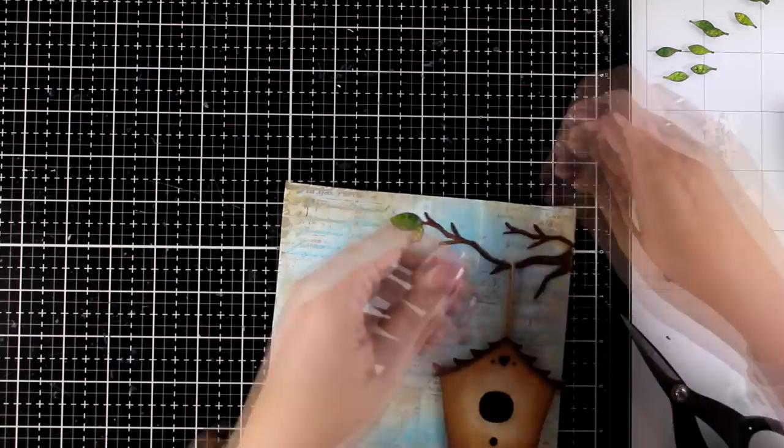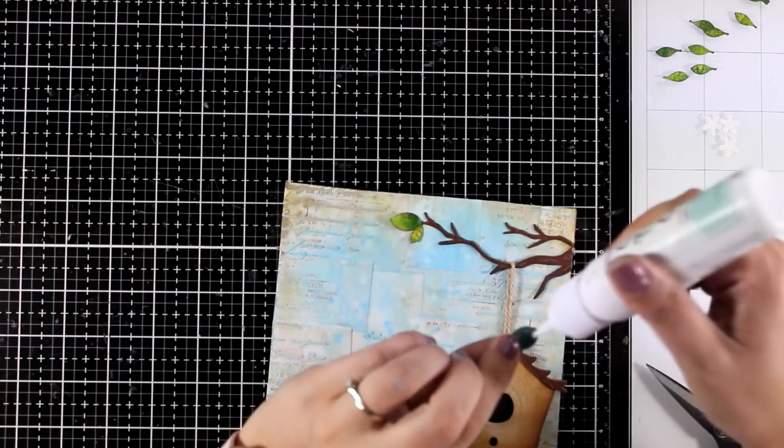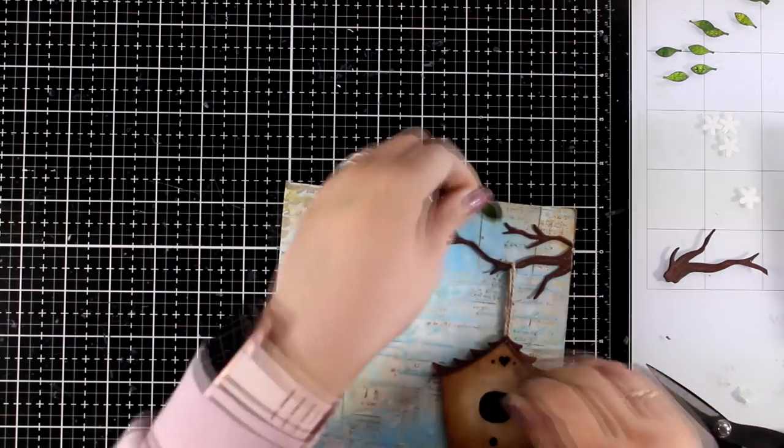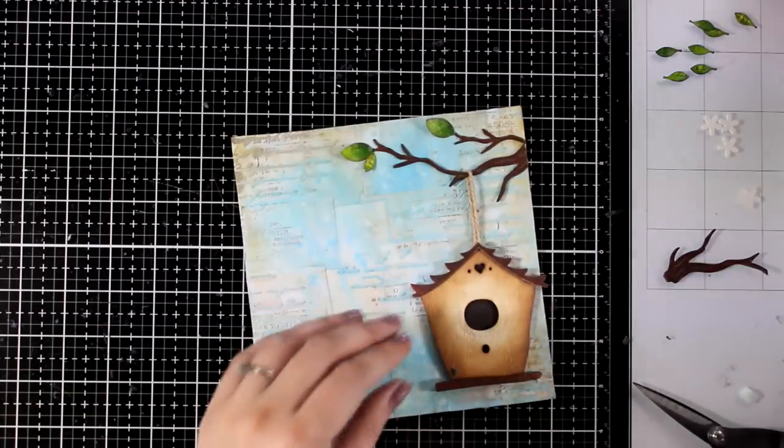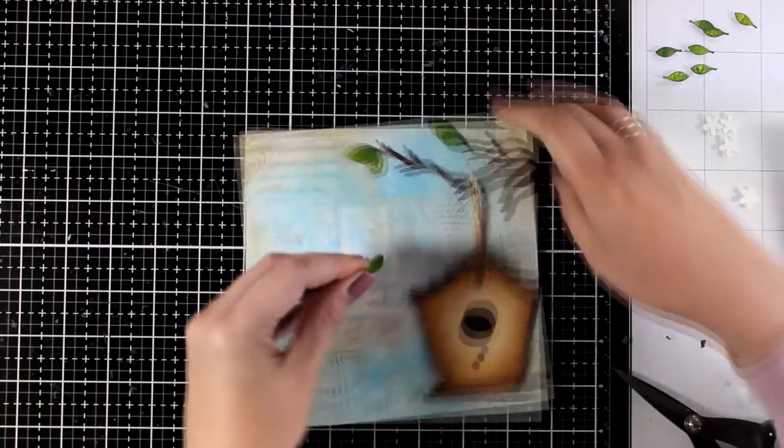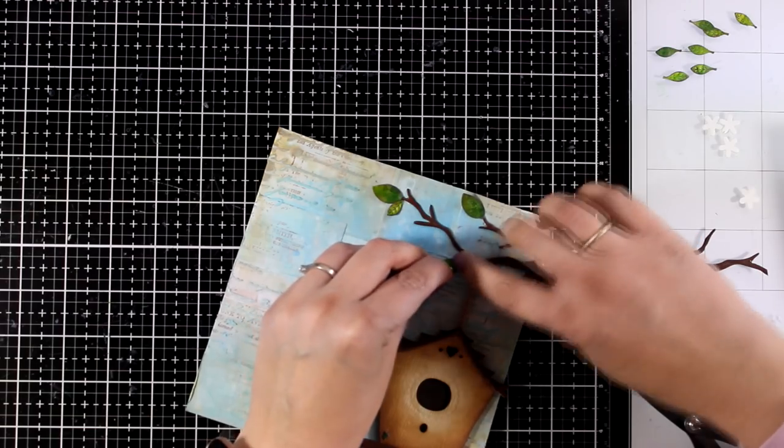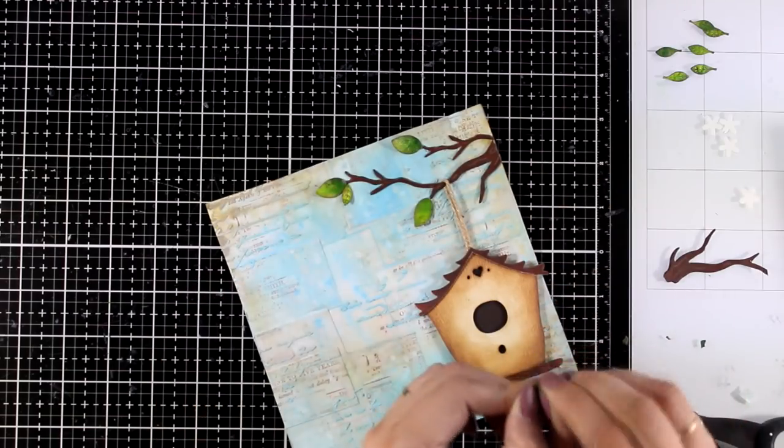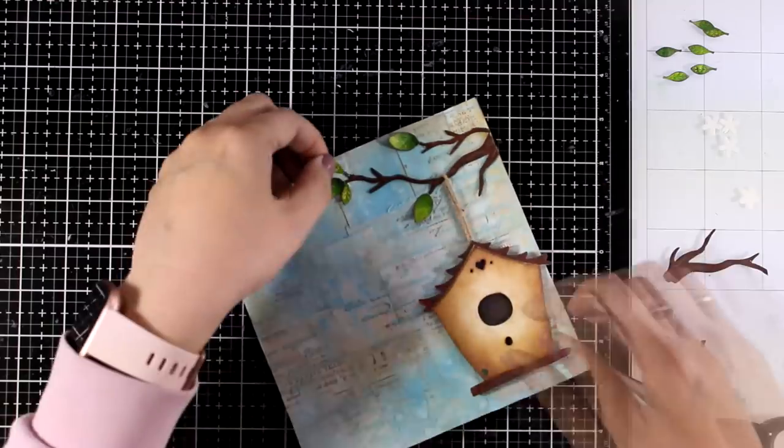You can recreate this kind of idea for any of the seasons. So for example, if it is fall, you can color your leaves differently. If it's winter, don't use leaves at all and add some snow on top of the branches and have snow at the background. I think that it is really versatile, this branch, and can be used throughout the year.